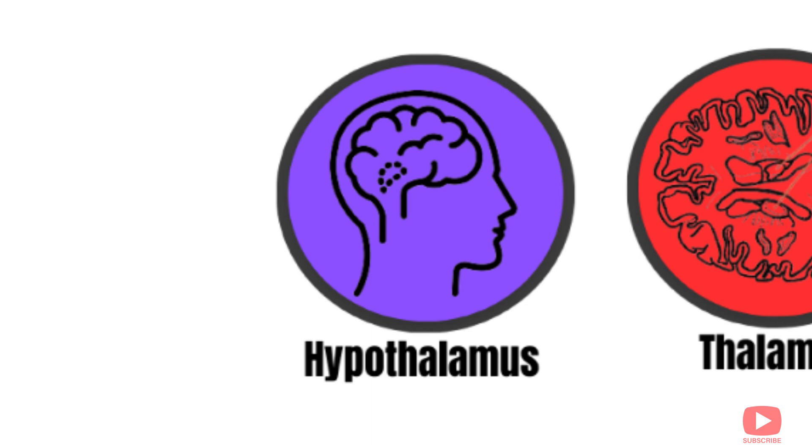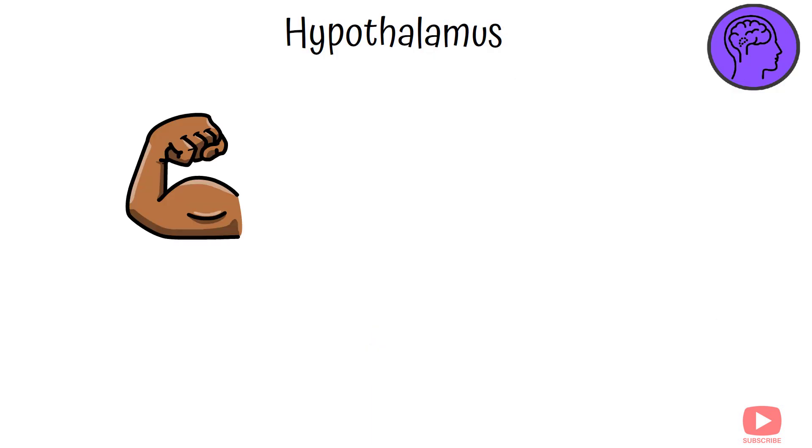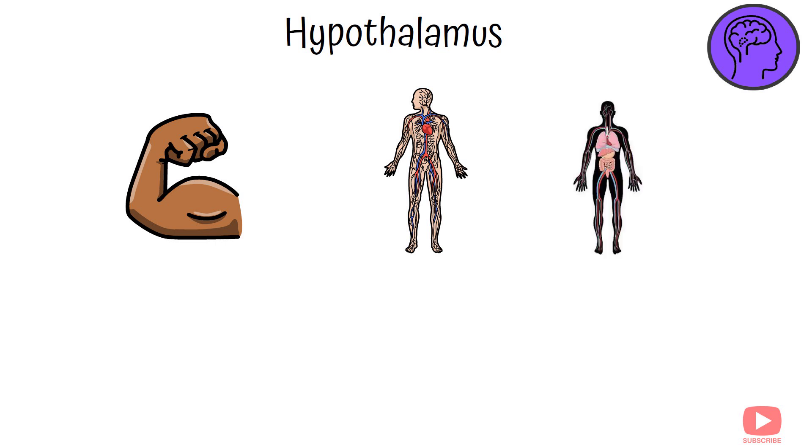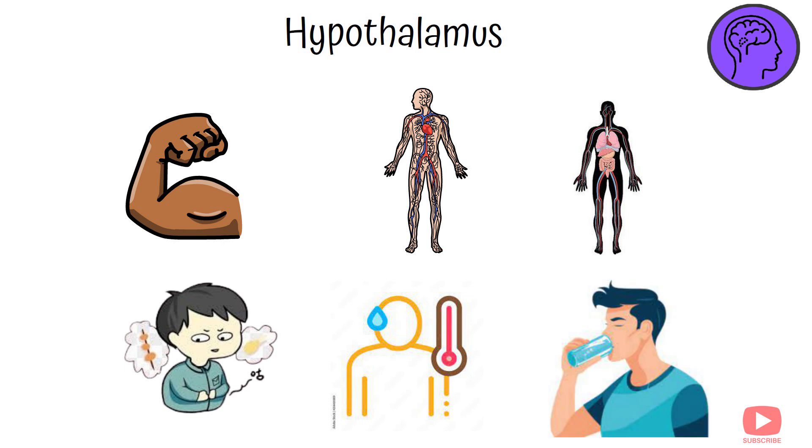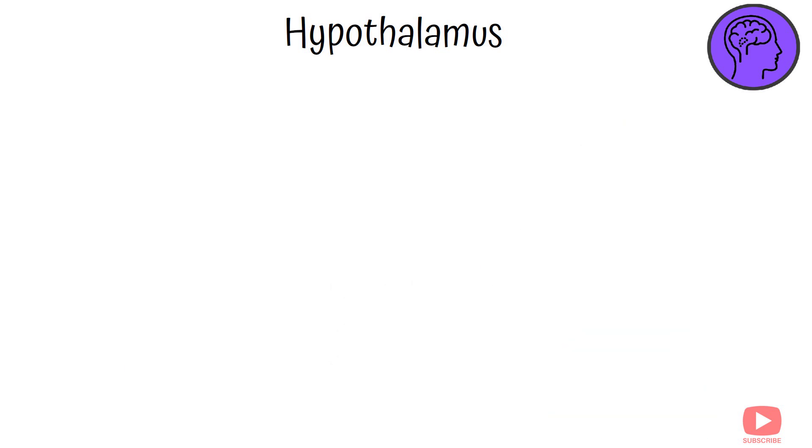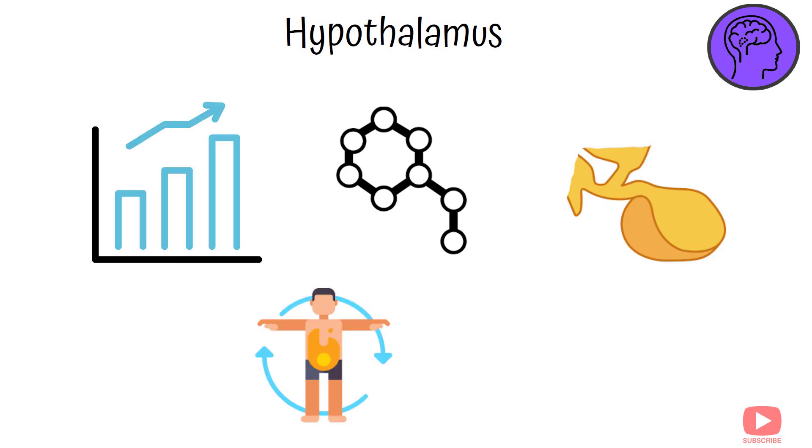Hypothalamus. The hypothalamus is a tiny but powerful structure that maintains the body's internal balance, or homeostasis. It regulates things like body temperature, hunger, thirst, and sleep cycles. The hypothalamus also controls the release of hormones through the pituitary gland, impacting growth, metabolism, and stress response.